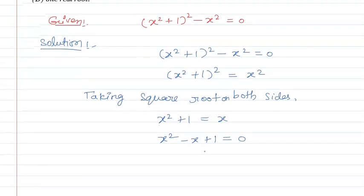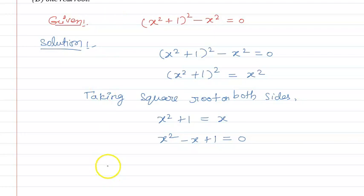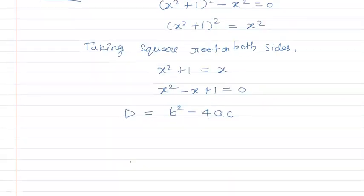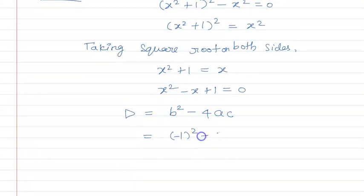We get a quadratic equation. Now to check the nature of the roots, we look at the discriminant. Discriminant D = b² - 4ac, where b is the coefficient of x, a is the coefficient of x², and c is the constant term. So here, b = -1, giving us (-1)² - 4(1)(1).